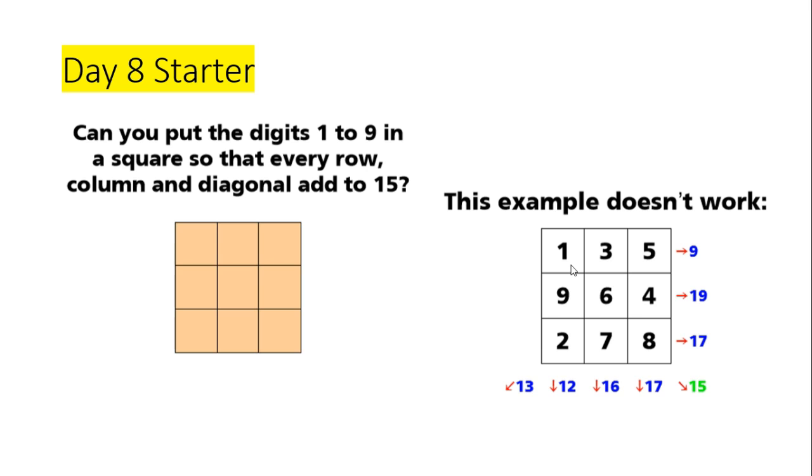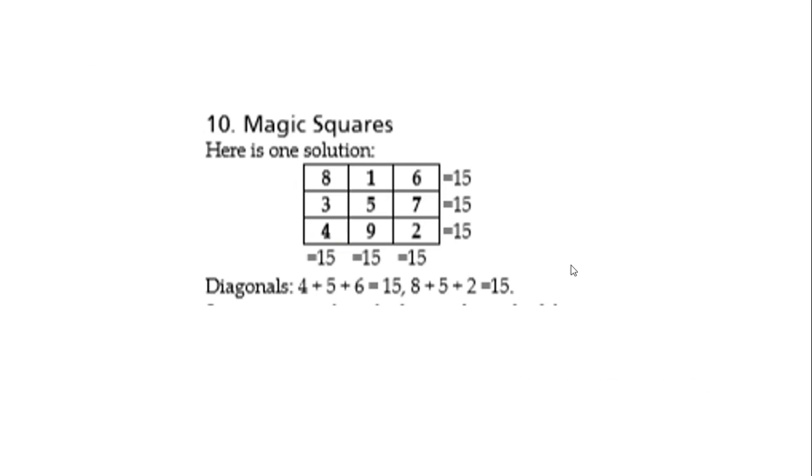Okay I'm just going to reveal the solution so please pause it if you haven't finished. Here's one solution. I did say earlier that there is more than one solution so your solution might look different to this, so please share it with me. You can see that each of the rows adds up to 15, the columns add up to 15 and the diagonals also make 15 so it works. And I believe that this can take quite a while to do. I wonder if you noticed any patterns or anything that helped you to get there.